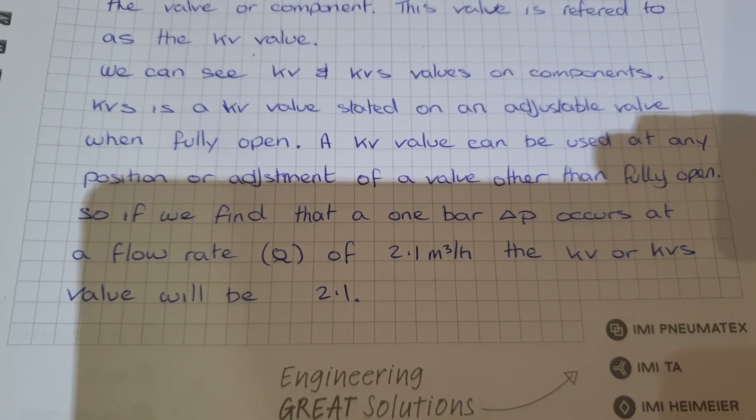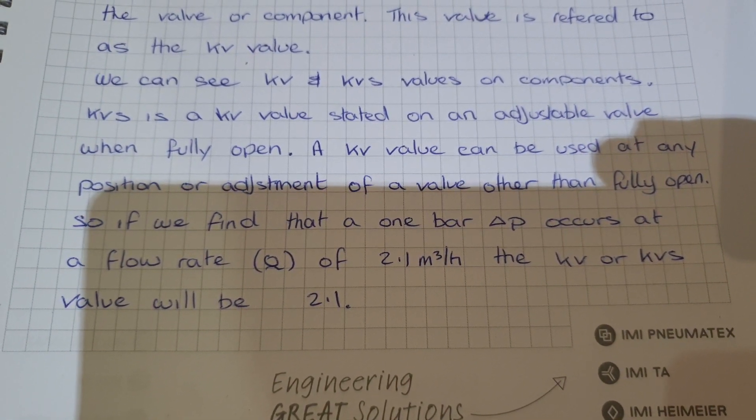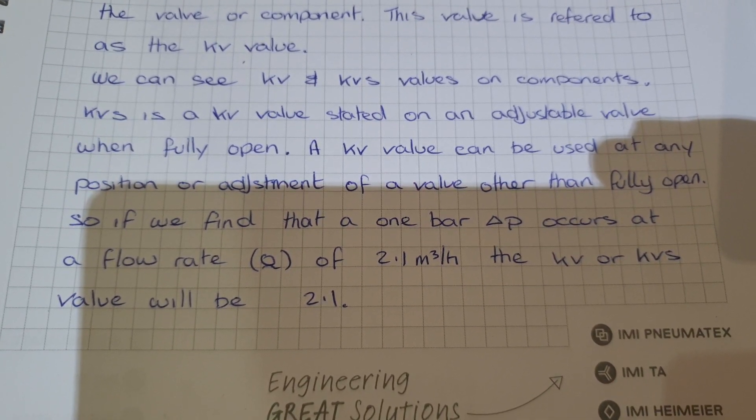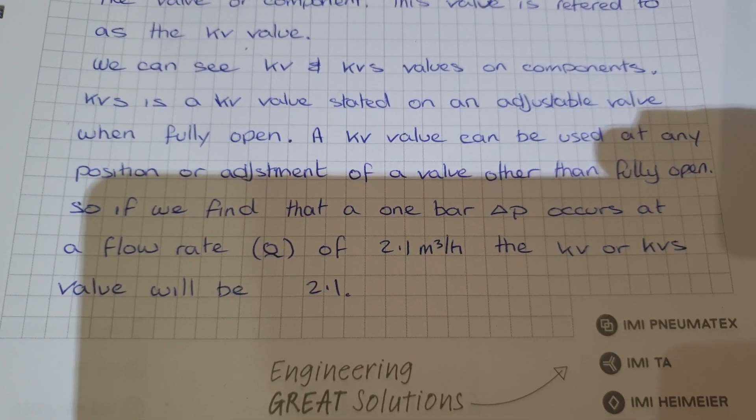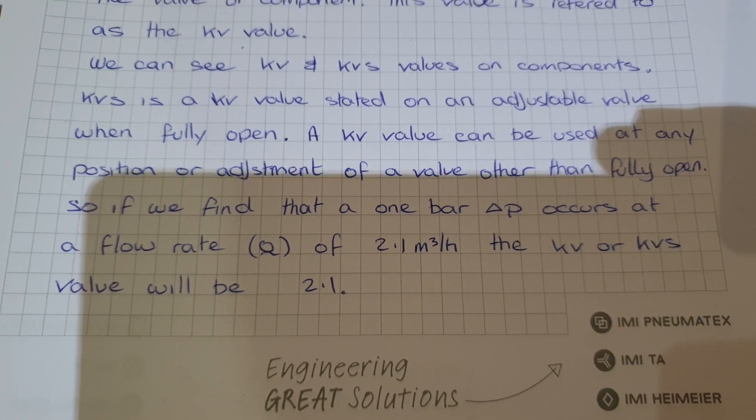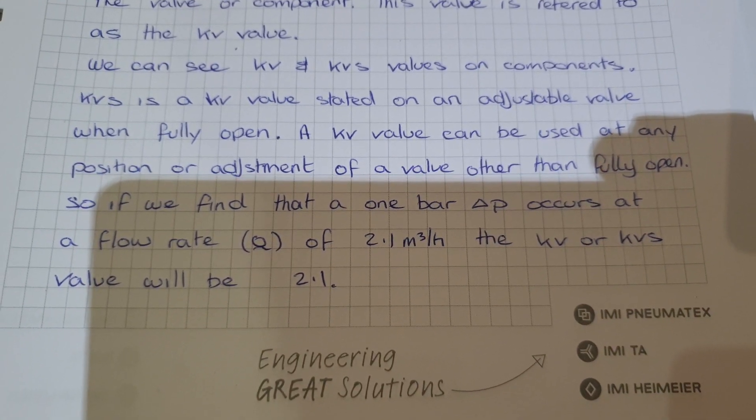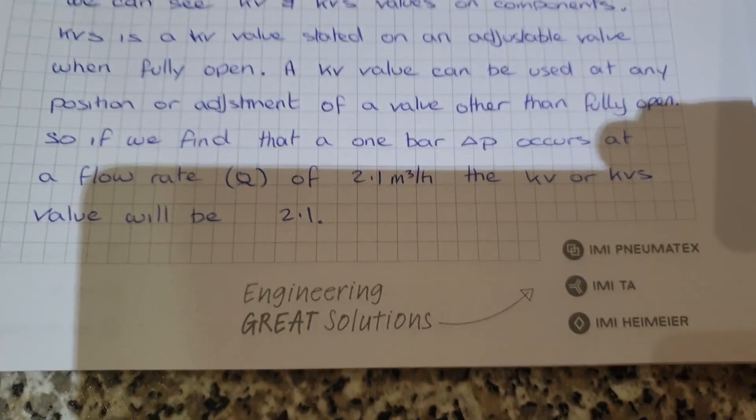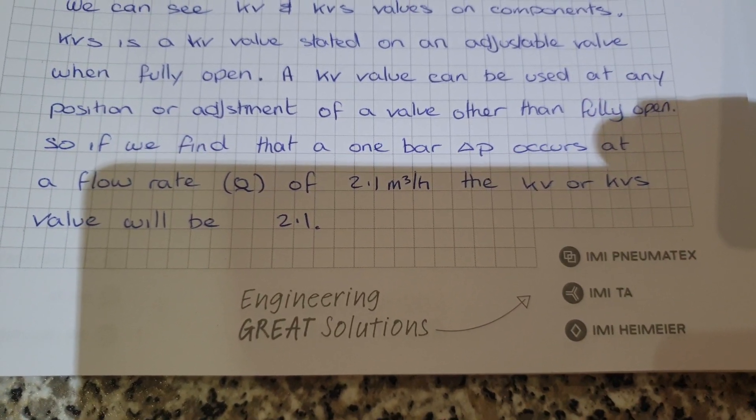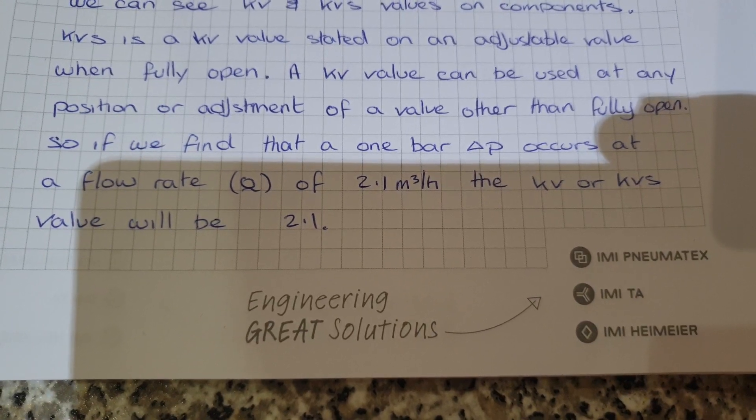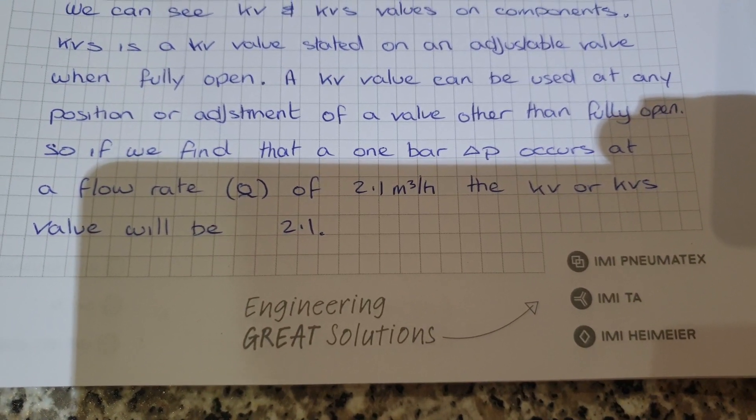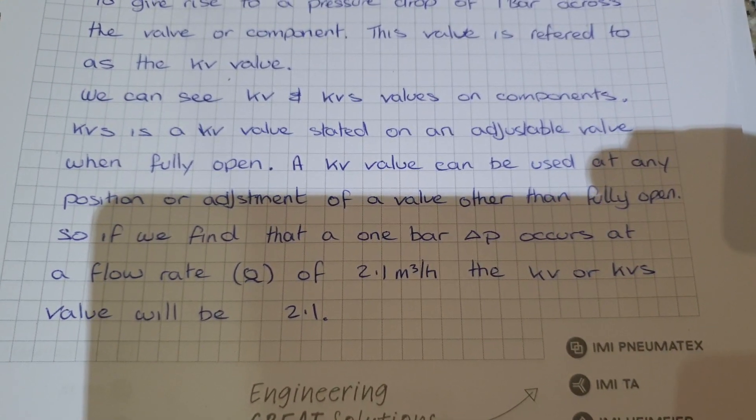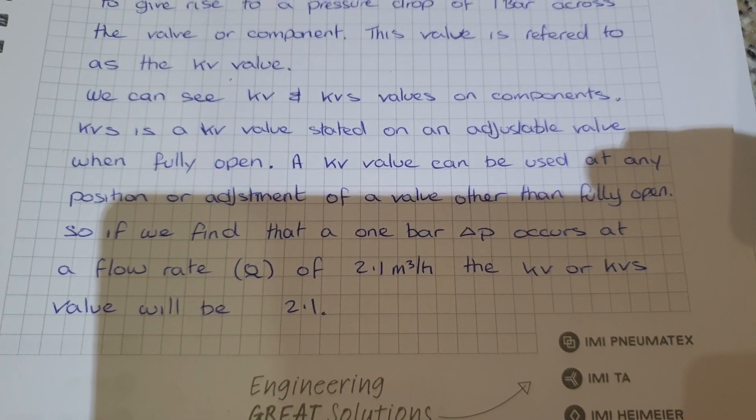We can see KV and KVS values on components. KVS is a KV value stated on an adjustable valve when it's fully open. A KV value can be used at any position or adjustment of a valve other than fully open. So if we find that a one bar delta P occurs at a flow rate of 2.1 cubic meters an hour, the KV or KVS value will be 2.1.